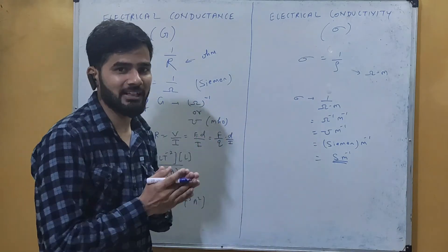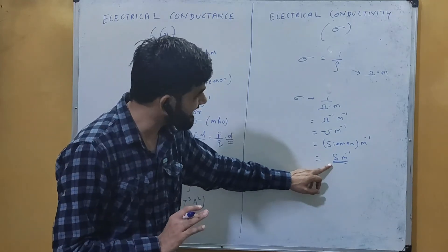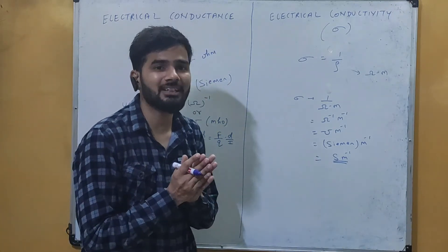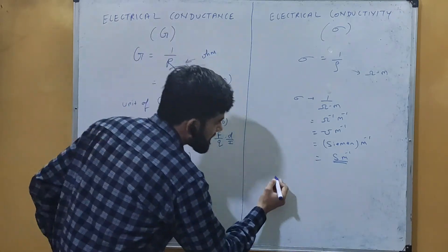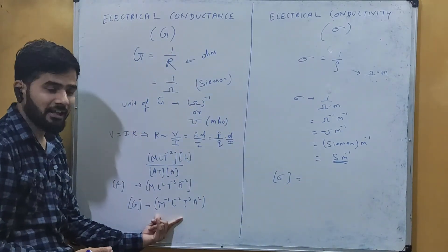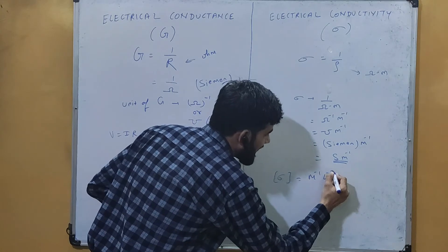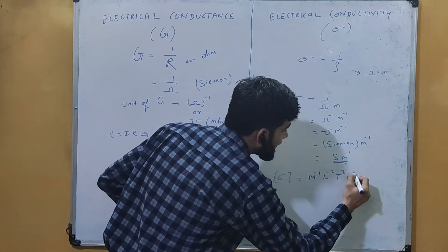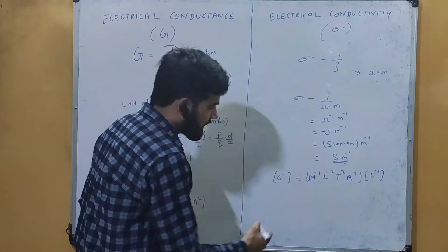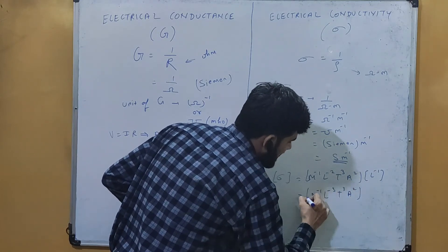To find the dimensional formula of conductivity, we use the dimensional formula of the siemens (unit of conductance), which is M⁻¹L⁻²T³A². Since conductivity is siemens per meter (S·m⁻¹), we multiply by L⁻¹. Therefore, the dimensional formula of conductivity is M⁻¹L⁻³T³A².